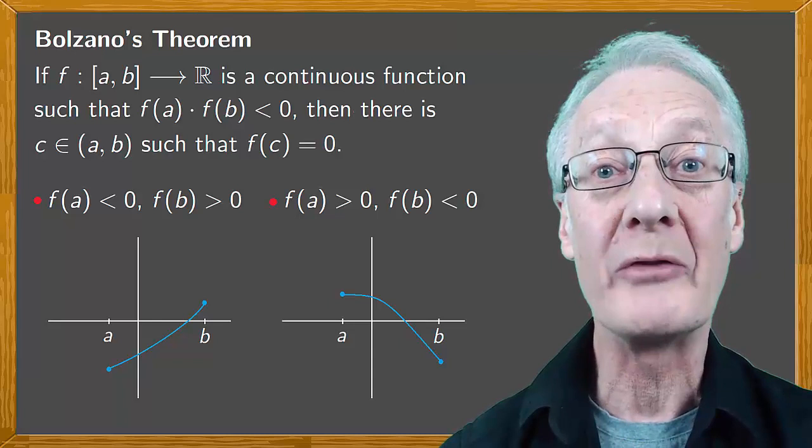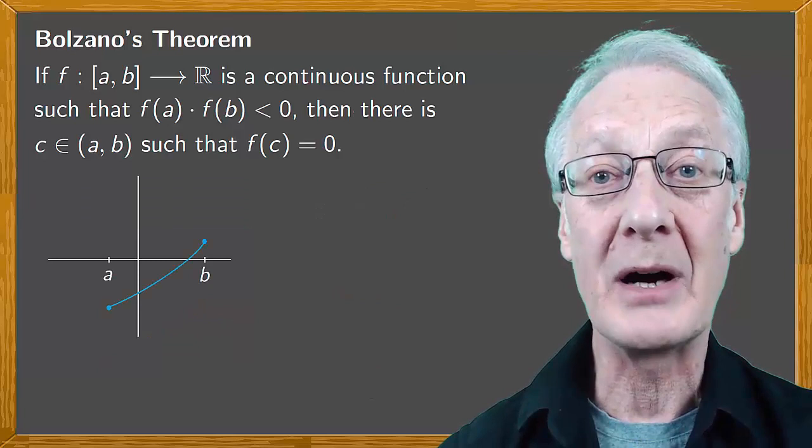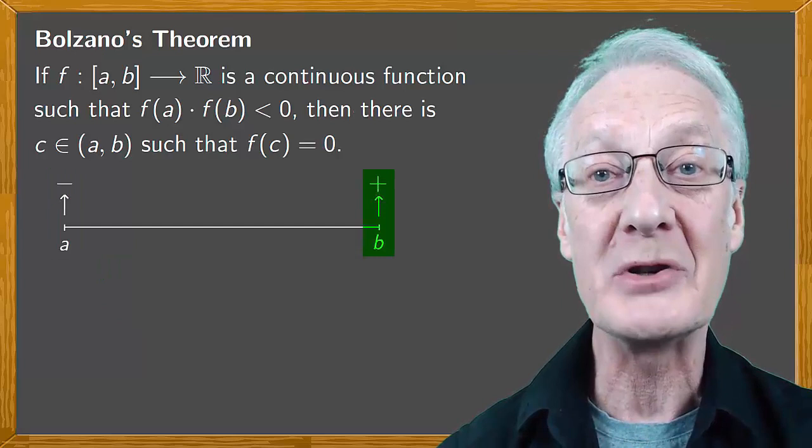Let's consider the situation where f(a) < 0 and f(b) > 0. We can deal with the other case by analogy. We only consider the domain and the signs of the function at the ends of the interval. The image at a is negative and the image at b is positive. The interval has length b - a.